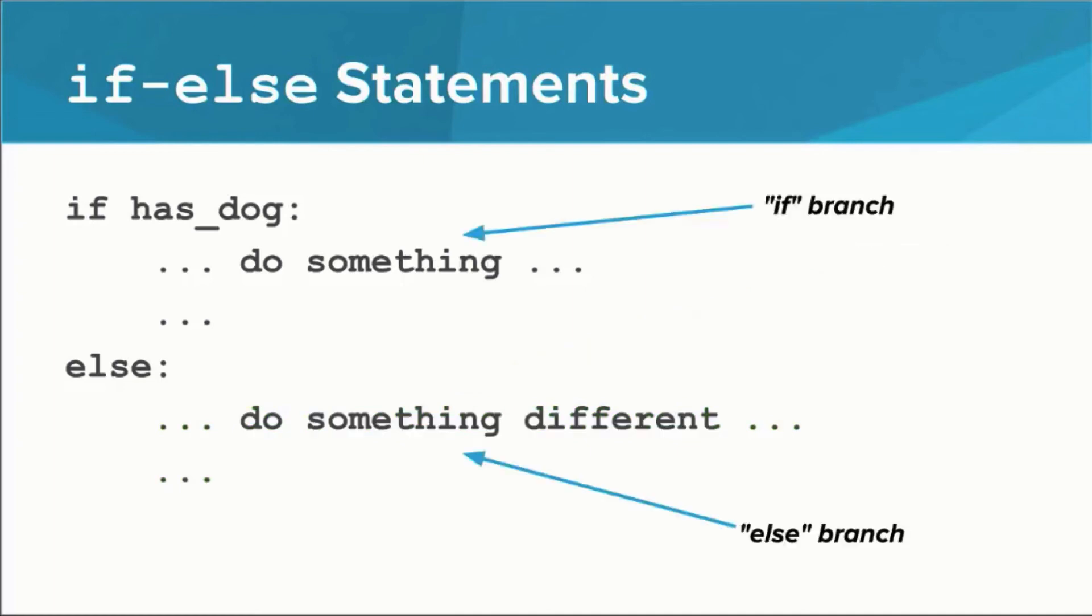So now that we have two blocks of code in the if statement, we need some way to describe them other than calling them the body. When an if statement has both an if component and an else component, the blocks of code in them are commonly called branches. The block under the if component is called the if branch, and the block under the else component is called the else branch.